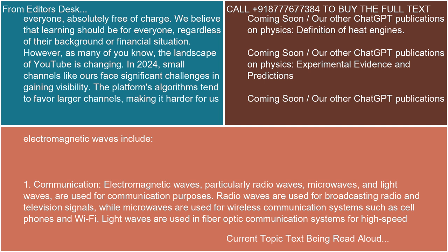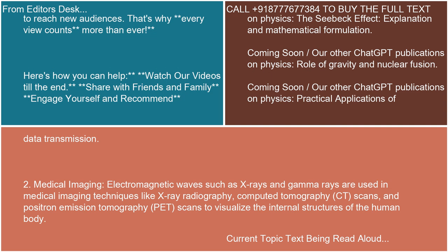1. Communication: Electromagnetic waves, particularly radio waves, microwaves, and light waves, are used for communication purposes. Radio waves are used for broadcasting radio and television signals, while microwaves are used for wireless communication systems such as cell phones and Wi-Fi. Light waves are used in fiber-optic communication systems for high-speed data transmission.